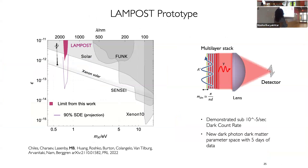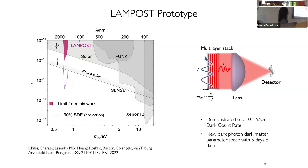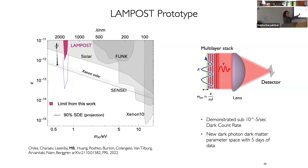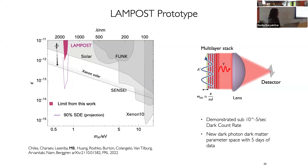So far it's just the dark photon exclusion limit. This is the pink region here, which at the time got a little sliver of parameter space below the solar constraints. Since then, the XENONnT experiment did an upgrade and beat us. But I think it's still pretty impressive that our little experiment could do better than a multi-tonne Xenon experiment that ran for many years. The idea is to optimize the volume where these particles can convert.